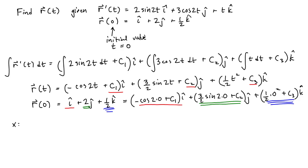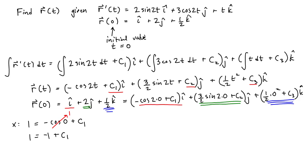Let's evaluate these component by component, beginning with the x component. The i-hat component gives us 1 equals minus cosine of 0 plus C1. The cosine of 0 evaluates to 1, so we get 1 equals minus 1 plus C1, which means C1 is equal to 2. We've found our first constant of integration.